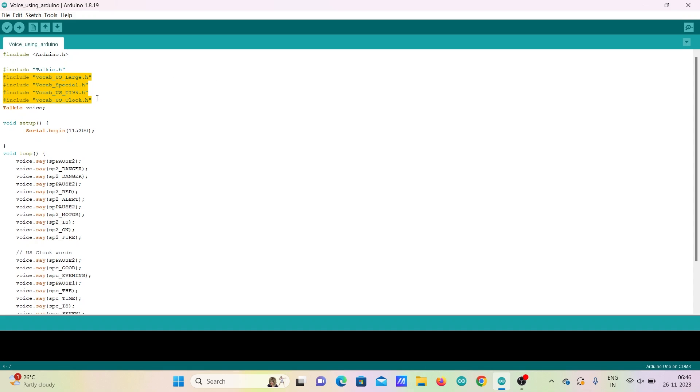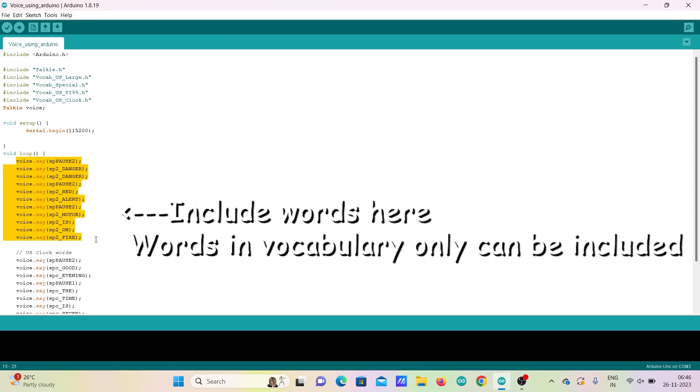In the bottom section of the code, the required words to be generated as speech are given. Also, you can see the command for adding pause between words.